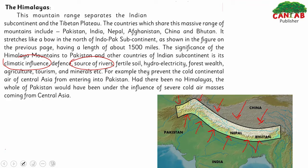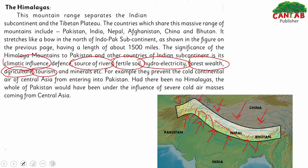The Himalayas are also a source of rivers — when rain falls, water moves downward and feeds rivers. They create fertile soil, as rivers carry sediment downstream. They support hydro-electricity through dams. Forest wealth is abundant in these mountains, providing oxygen. Agriculture is supported by river water, and tourism is attracted to these hills. Valuable minerals are also found in these mountains.